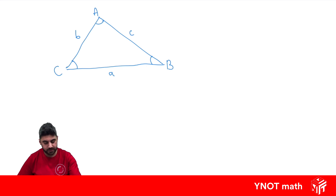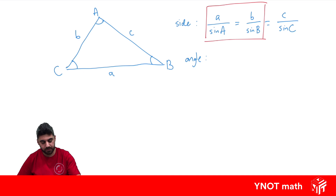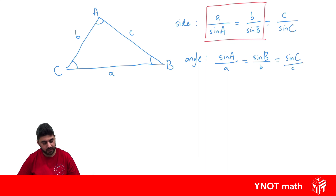Let's look at what the rule is to find an unknown side using the sine rule. That's going to be: a over sin A equals b over sin B equals c over sin C. In most cases we just use two pairs of these — we don't need all three to find a side. To find an angle, we're going to use the same formula, just flipped around: sin A over a equals sin B over b equals sin C over c. Again, finding the angle, we'll just use two of them.